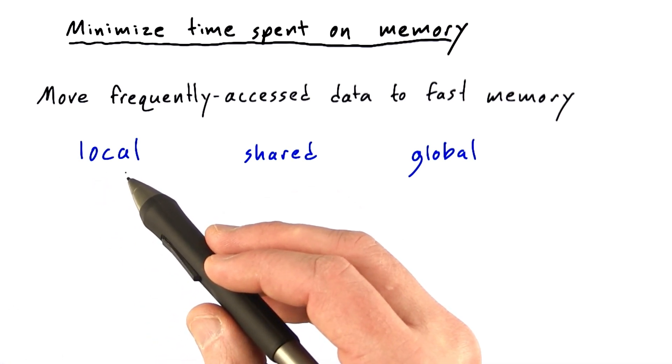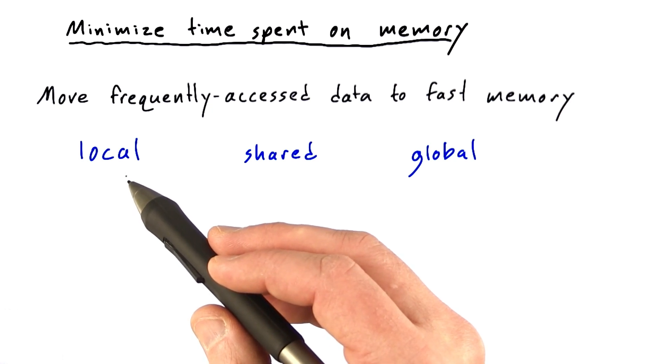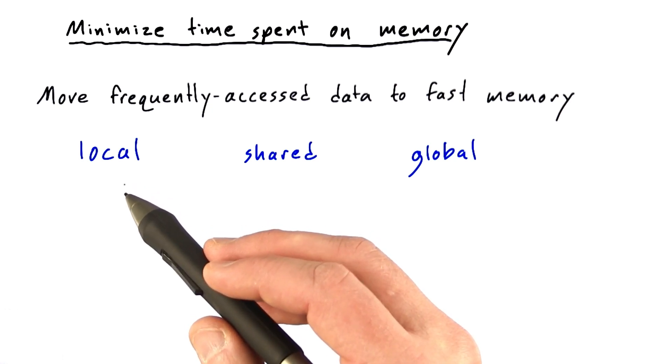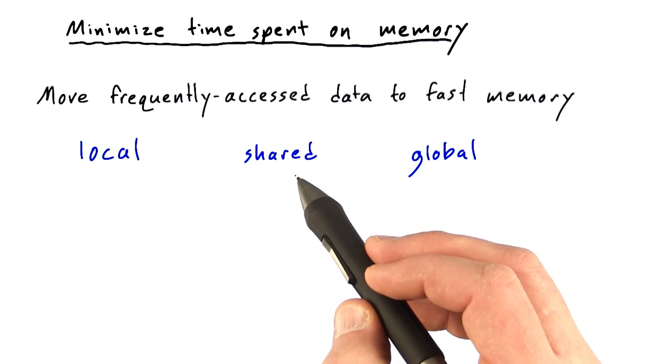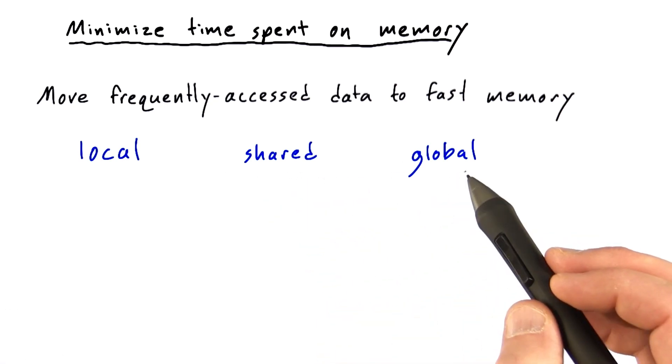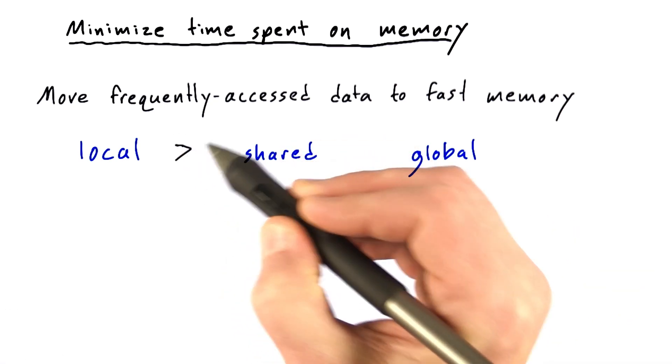There's local memory, which represents the given thread's private variables, local variables, parameters, things like that. There's shared memory, shared by a thread block. And there's global memory, shared by all the threads.